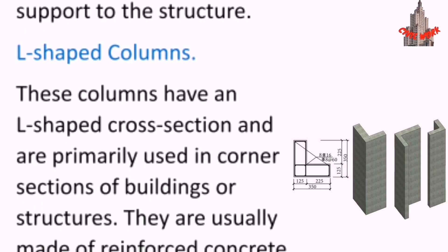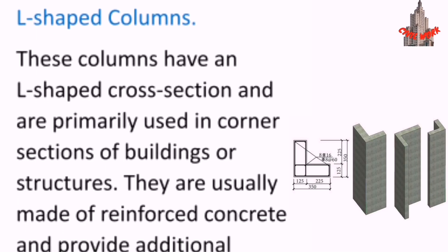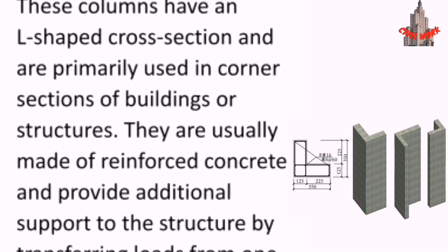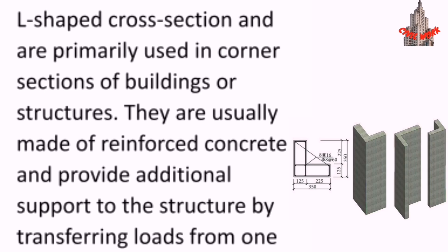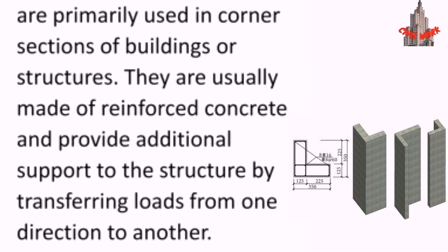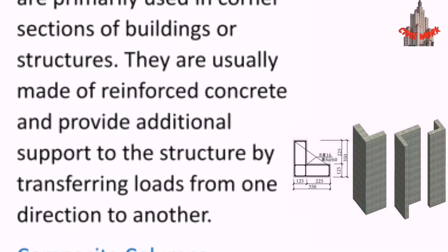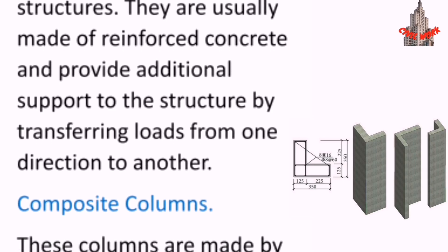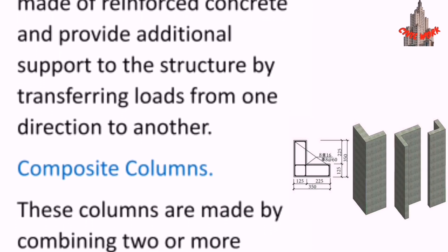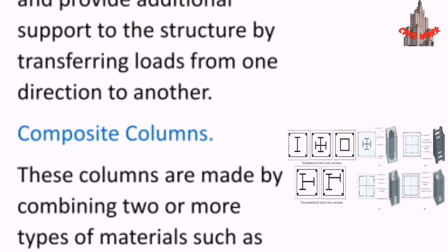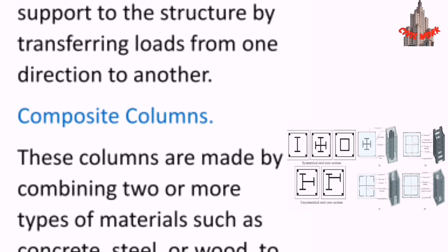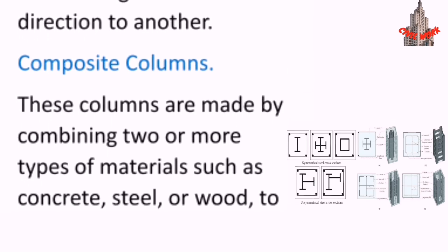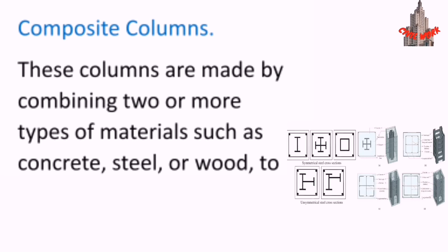L-shaped columns have an L-shaped cross section and are primarily used in corner sections of buildings or structures. They are usually made of reinforced concrete and provide additional support to the structure by transferring loads from one direction to another.